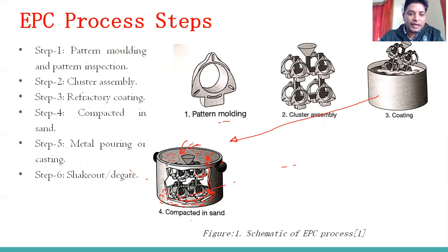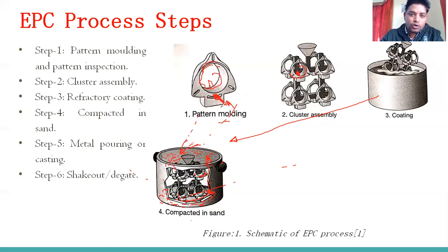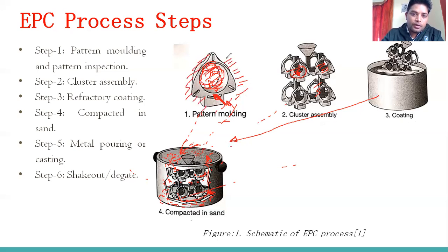We fill the molding sand around and inside the assembly. The gate is attached on one side through which molten material enters. The blank areas — inside and outside the assembly — are completely filled with molding sand. Only the pattern area itself is left by the sand; the rest is completely filled in this compaction step.